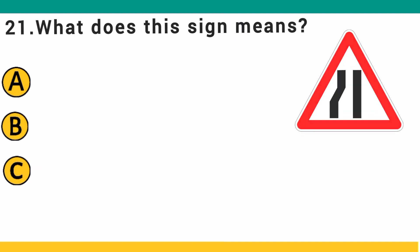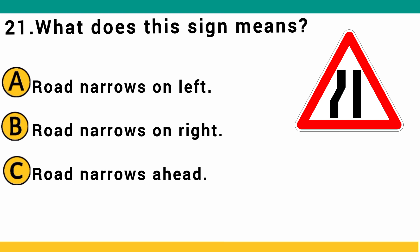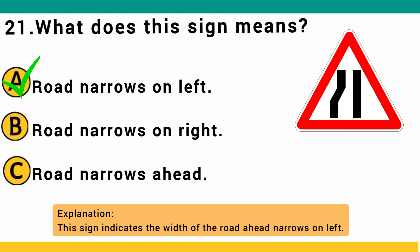What does this sign mean? A) road narrows on left, B) road narrows on right, or C) road narrows ahead. The correct answer indicates the width of the road ahead narrows on the left.